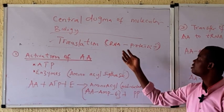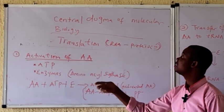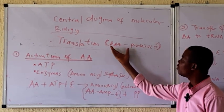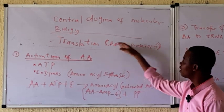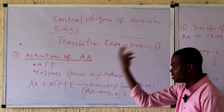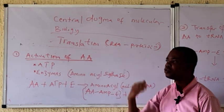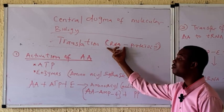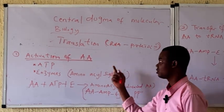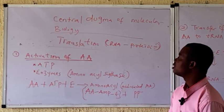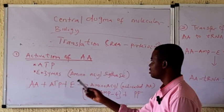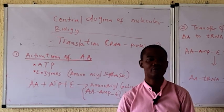Translation is the synthesis of protein using information from RNA — the process whereby genetic information present in RNA is used to produce protein. Translation basically involves three steps. The first step is activation of amino acid.